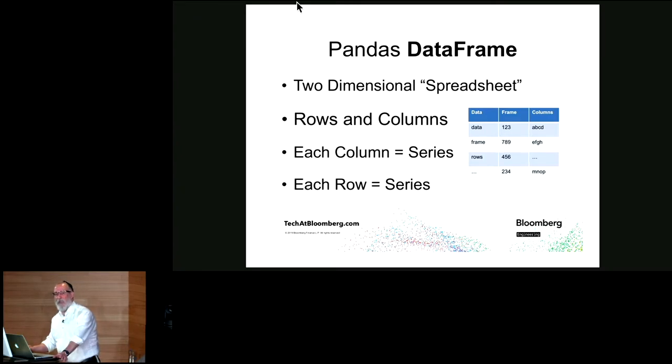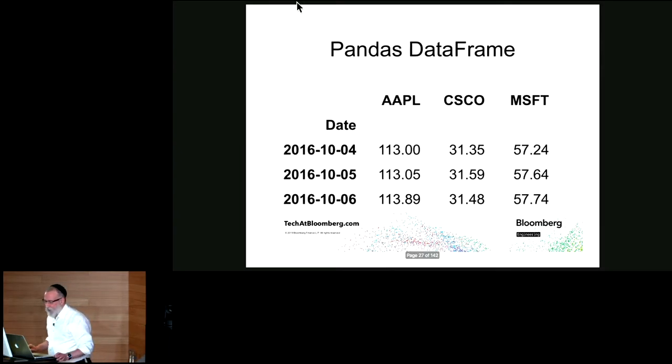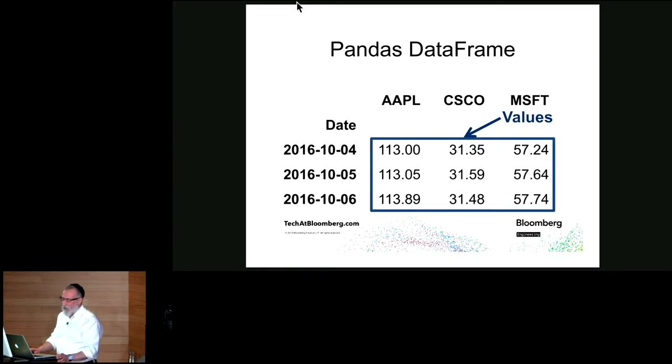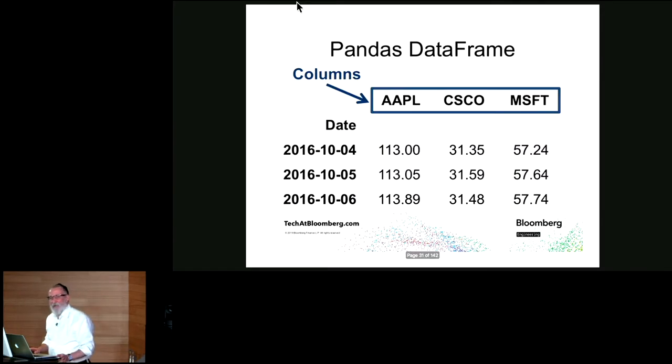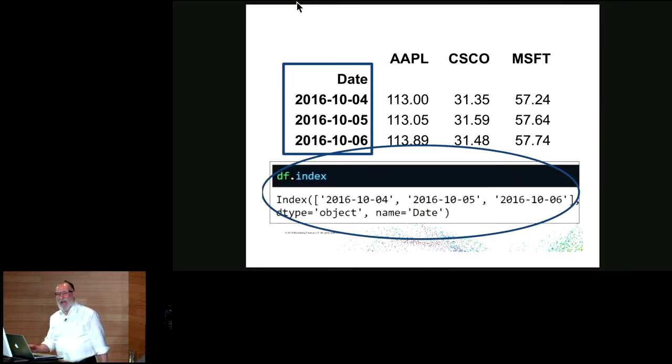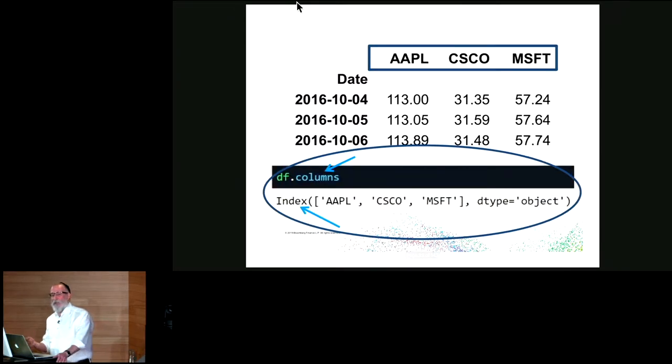A data frame, you can think of it as a two-dimensional spreadsheet, has rows and columns. Each column is a panda series. Each row is a panda series. Here are the parts of the data frame. You have your data values, your index, index name, and now you have columns because it's two-dimensional. Notice, if I take a look at the index attribute on a data frame, I get back an index object which contains a list of the keys in that index. Notice also, if I look at the columns attribute, I also get back an index object with a list of the column headings. So both the column headings and the index are index objects, but we just call one of them index and one of them columns.